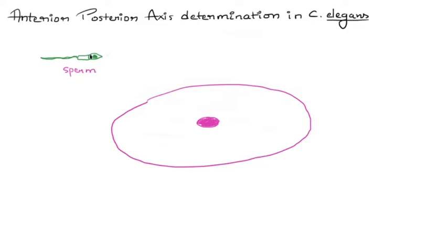Welcome back to another video. In this one we are going to deal with a topic from developmental biology, which is anterior-posterior axis determination in C. elegans.